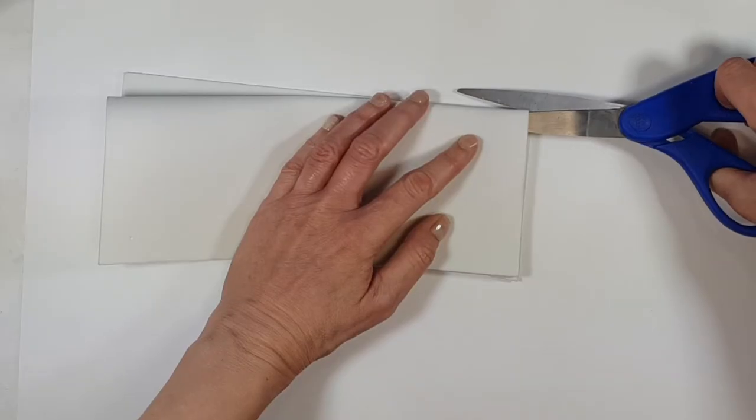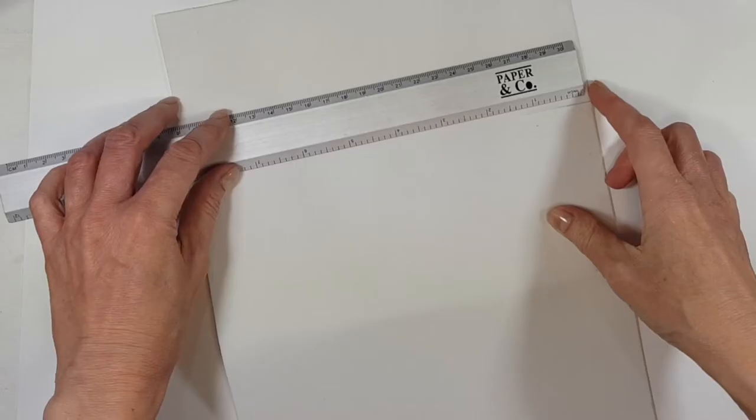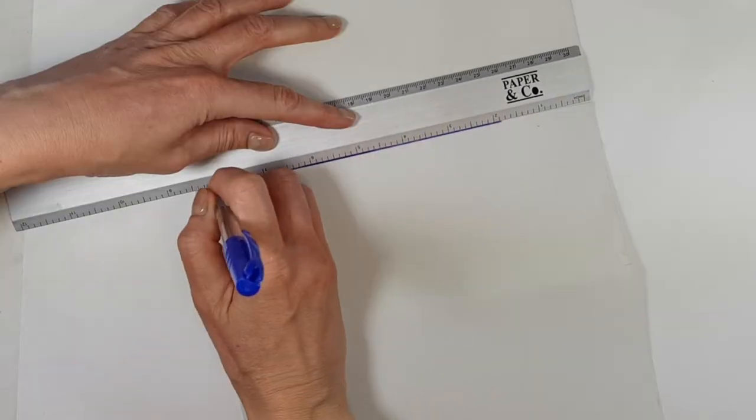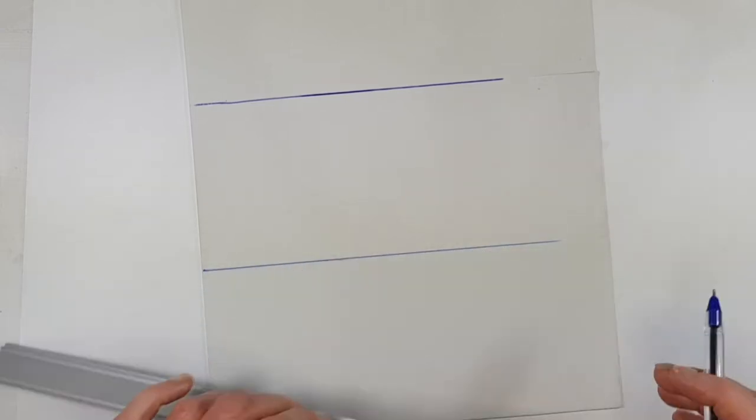Those parts that I cut are going to be like my three pieces, and so I'm just going to be taking my ruler, my pen, and trace the space.